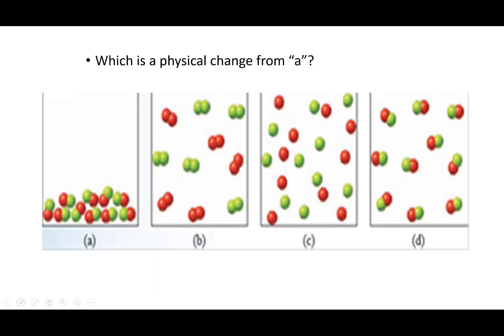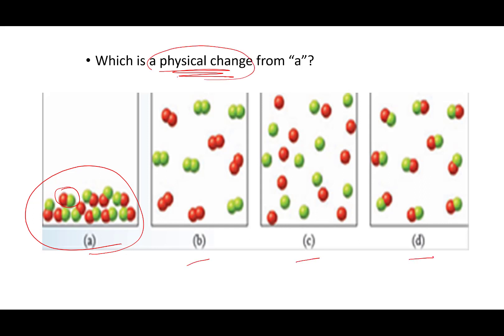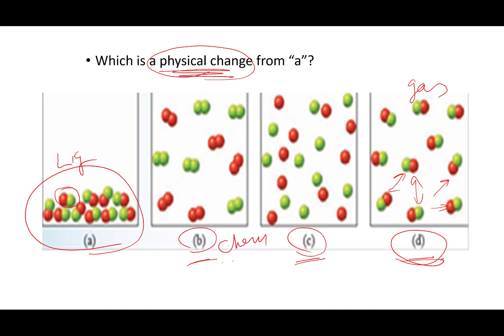Let's see if you've got this — I apologize this slide is a little blurry, but it was worth using. We've got a substance with red and green bits, one of each atom bonded together. Which is a physical change from A — is it B, C, or D? That's going to be D, because they're the same: one green, one red, but spread further apart. This is probably a picture of something going from liquid to gas. Both B and C represent a chemical change because the molecules have been broken apart and rearranged in a different format.